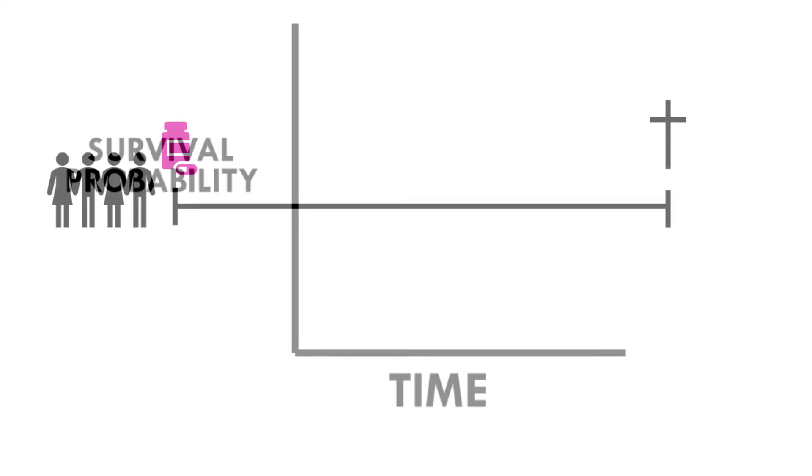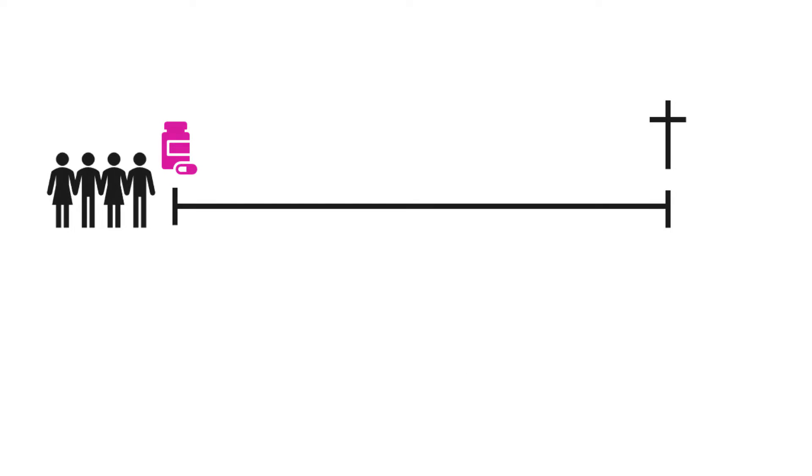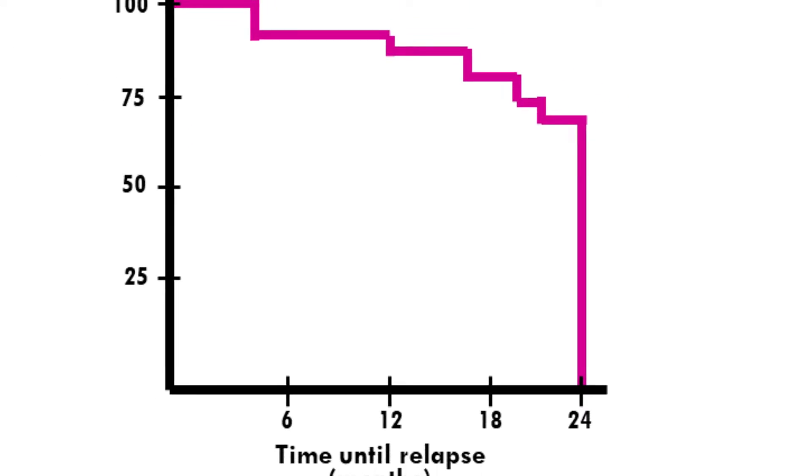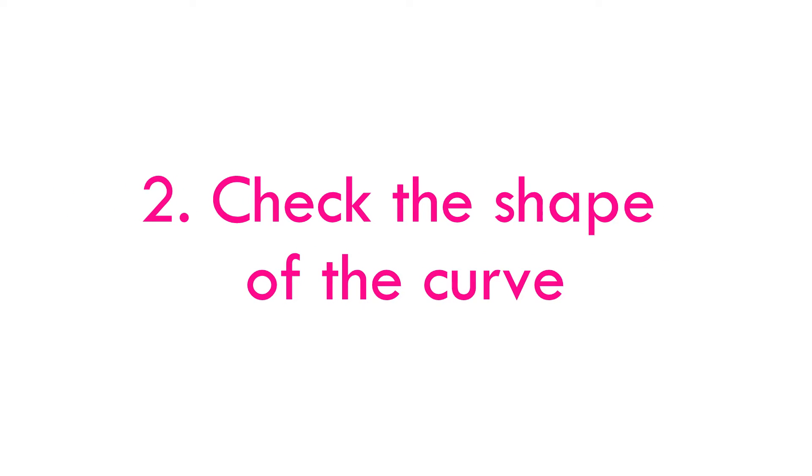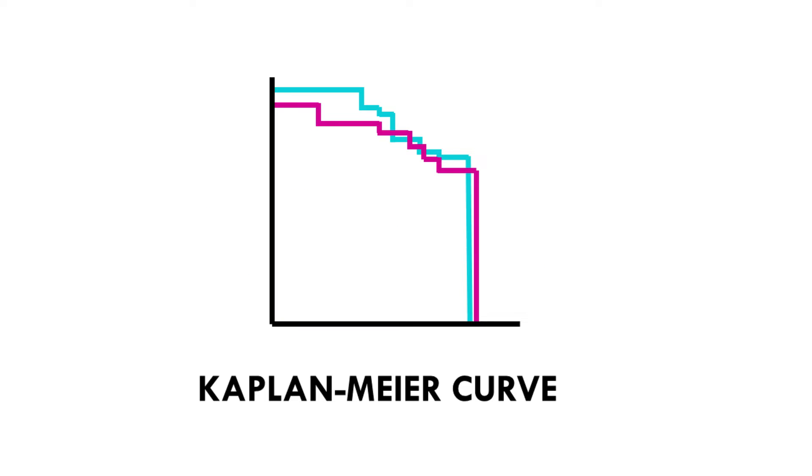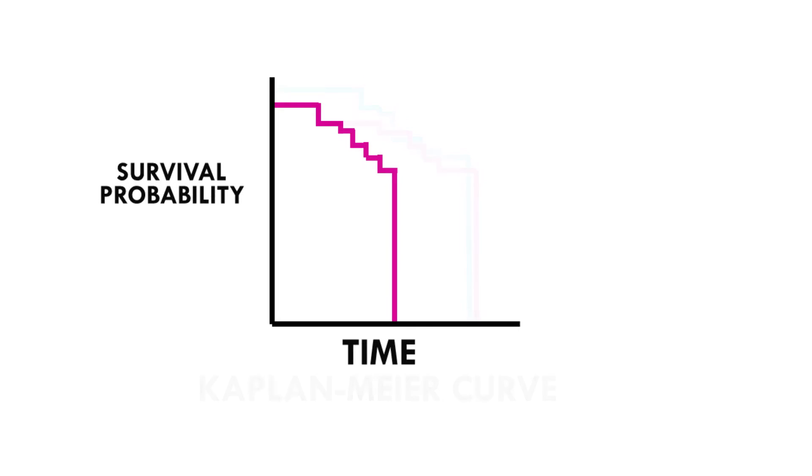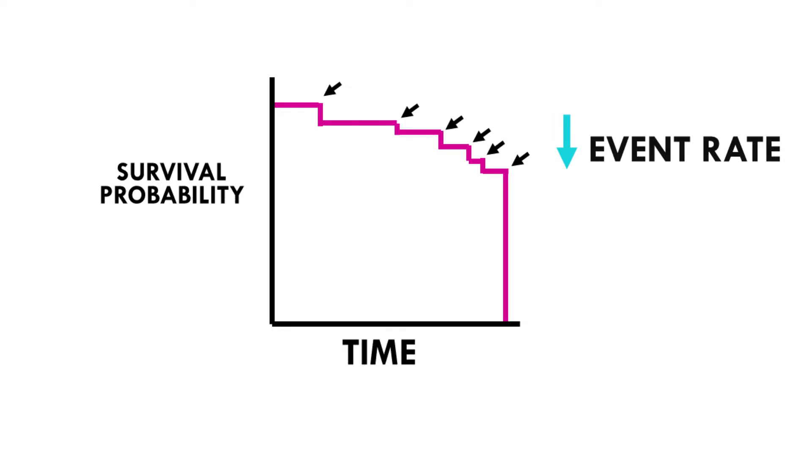For example, we could be looking at time to relapse in months, and the survival probability would be the probability of relapsing. Next we have to check the shape of the curve. At a first glance, the shape can give you a lot of information. A steeper slope indicates a higher event rate; if the event is death, this means worse survival. A flatter slope indicates a lower event rate, in other words, better survival.